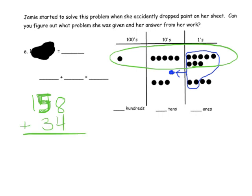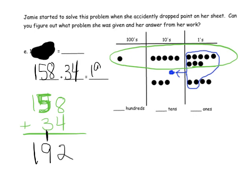The important thing is we have to line up our ones, tens, and hundreds columns — everything has to be lined up nice and neat. Then we can add. In our ones column we have 8 plus 4, which gives us 12. That means we have enough to bundle a new one in the tens column, with 2 left over in the ones column. Then we have 5 tens plus 3 tens plus a new ten, so that's 9 in the tens column. We have 1 in the hundreds column, so our problem was 158 plus 34 and our answer is 192.